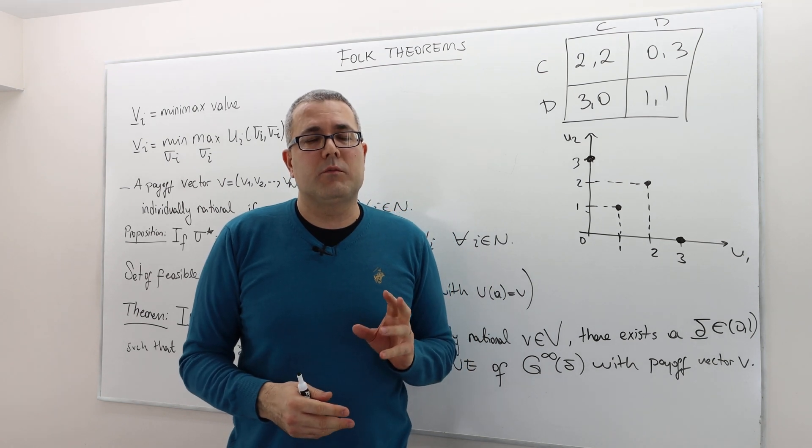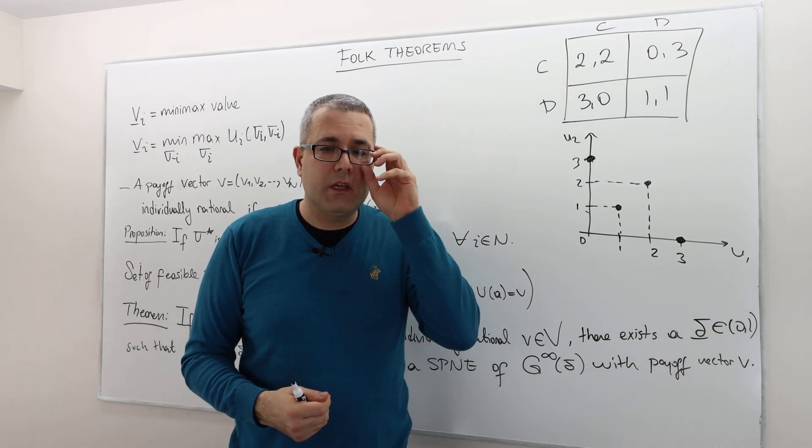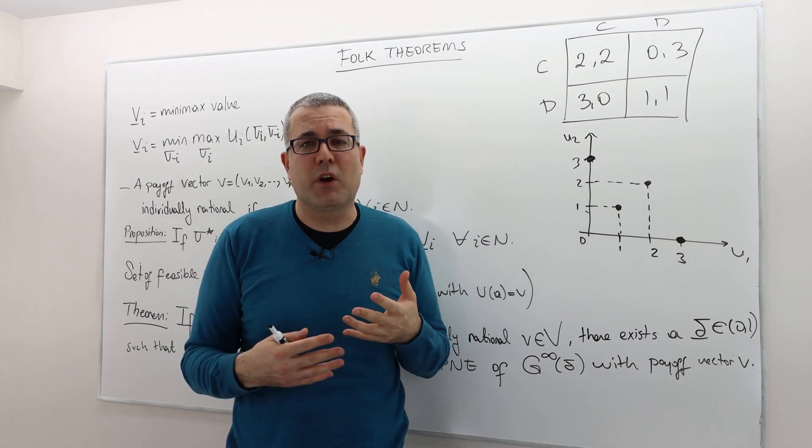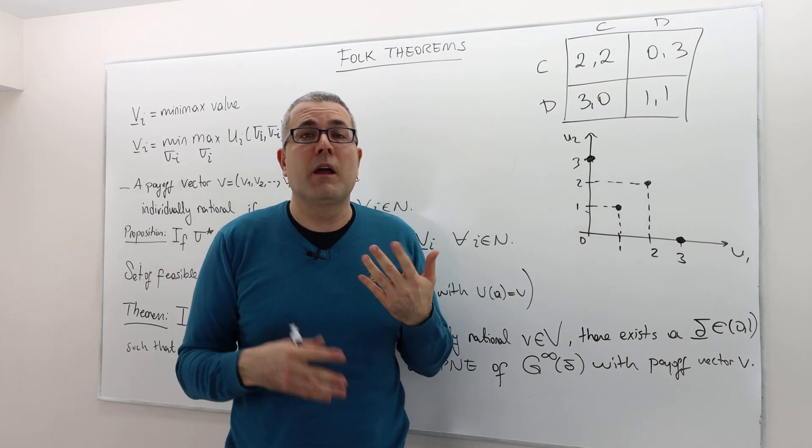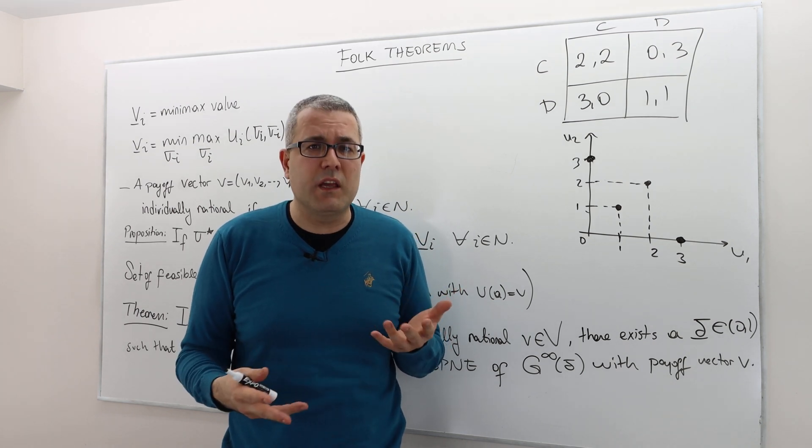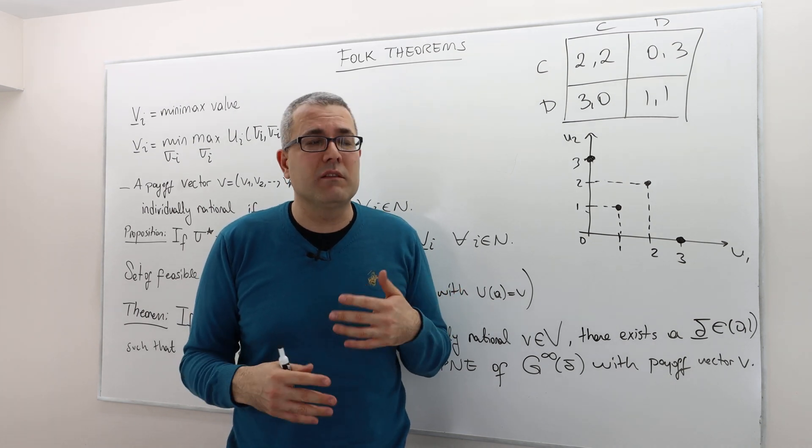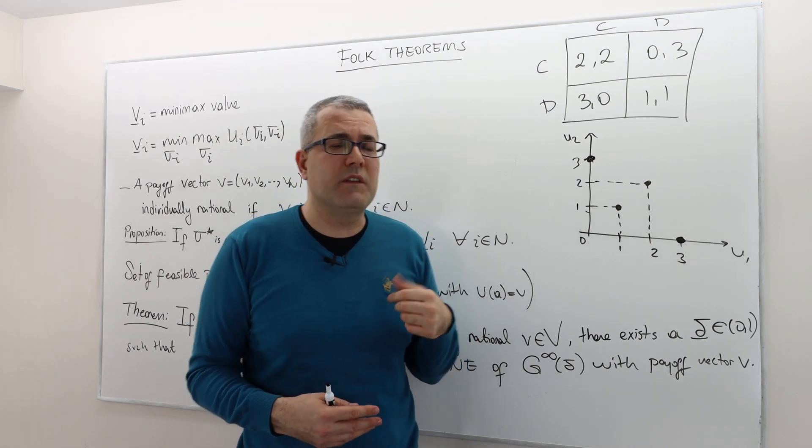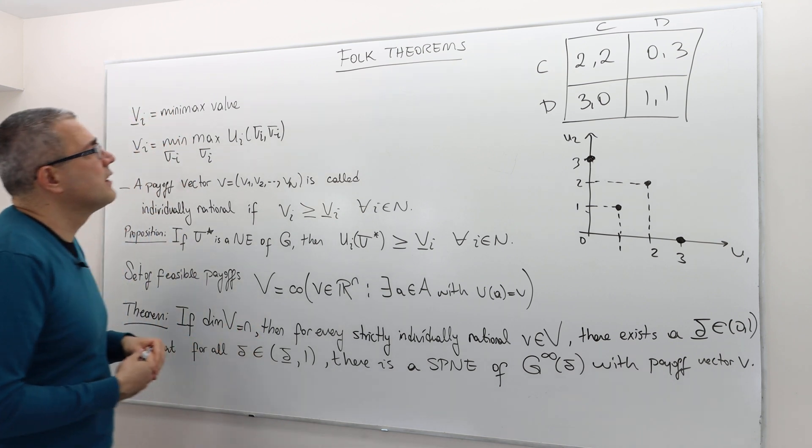All right, now let's talk about what's called Folk Theorems. It basically is asking the following question: if the monopoly pricing is sustainable in, for example, repeated Bertrand competition, can we really sustain everything? Well, not everything, but we can sustain a lot of things. And so this is basically what the Folk Theorems tells us.